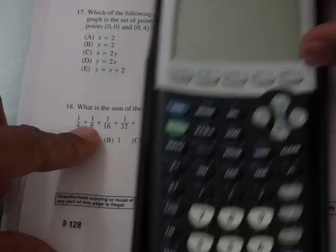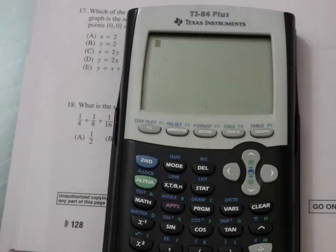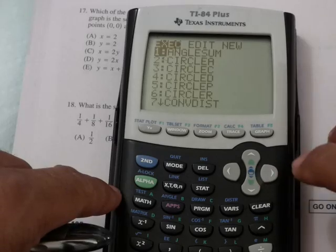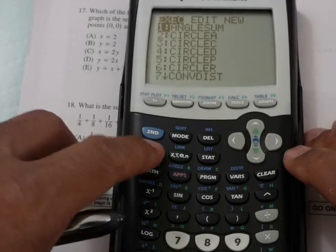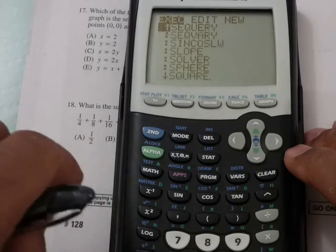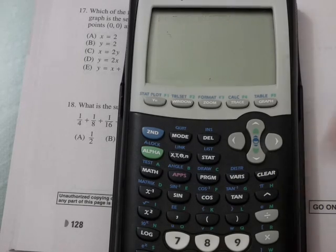So what I would do is turn it on first, then hit the program key. Next, I would press alpha and then the natural log button, and you should see Sequery. From there, I'm just going to press enter, and then enter again.